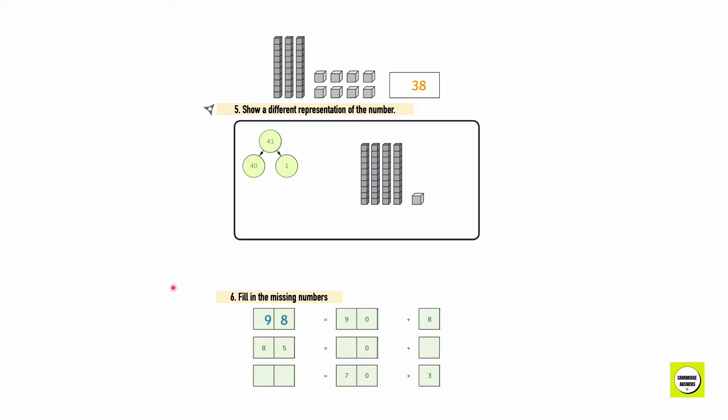Show a different representation of the number 41. We have four 10's and one 1's which is 41. Fill in the missing numbers. 98 is equal to 90 plus 8. 85 is equal to 80 plus 5. 73 is equal to 70 plus 3.